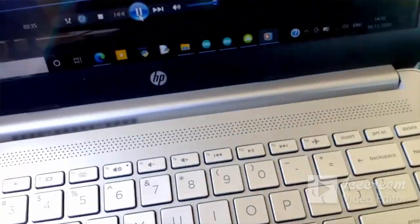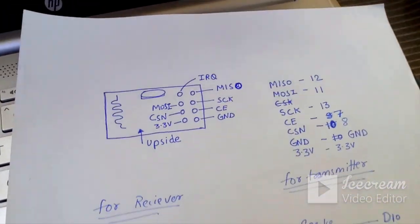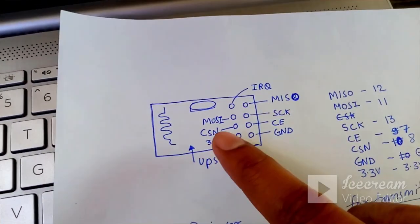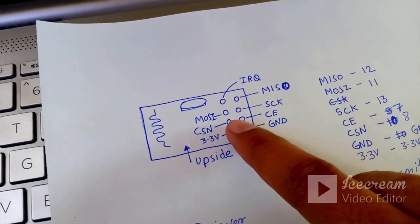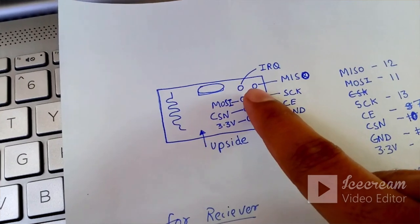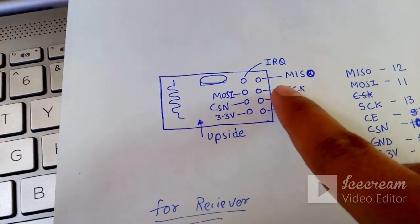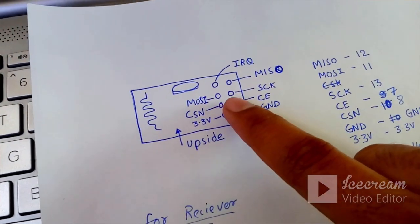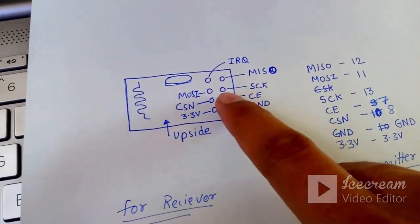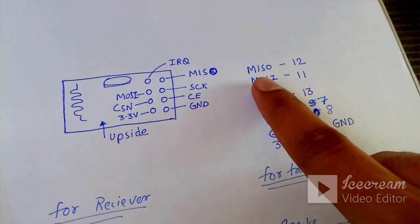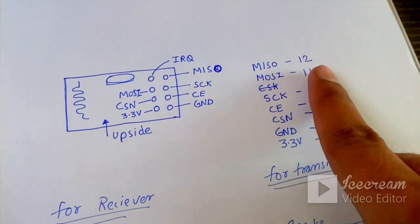Okay, let's come to its diagram. So I have its circuit diagram, you can see that this is the upside. If you see that NRF module, you will have this IRQ pin, MISO, MOSI, and CSKN - these all six pins you have. So what you have to do is that MISO pin will be connected to the 12.